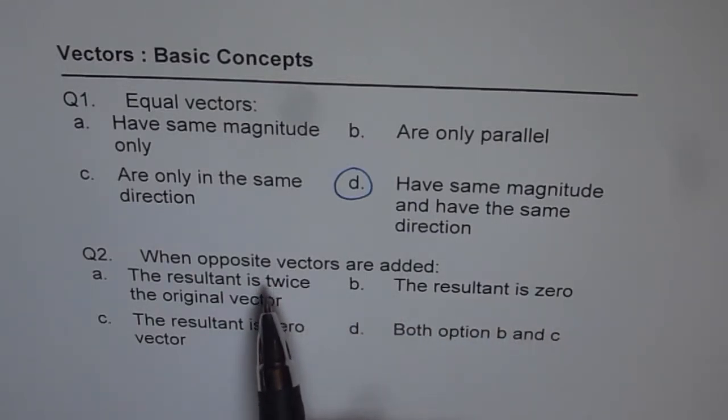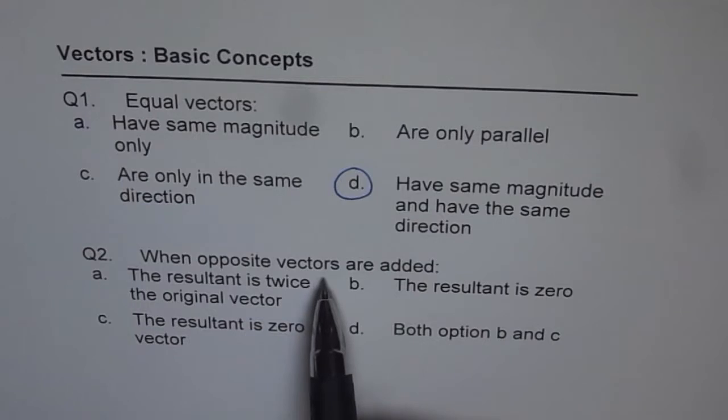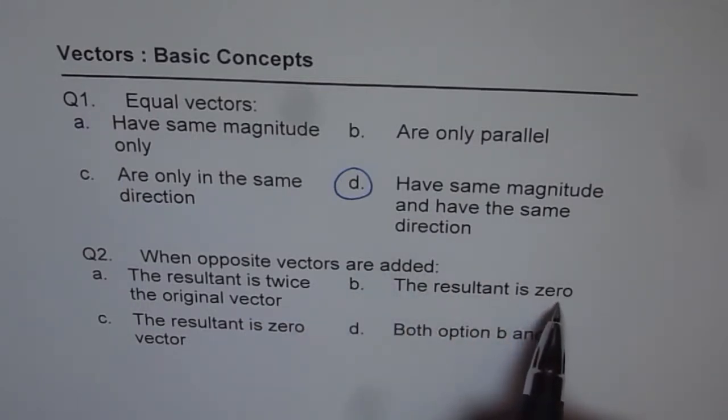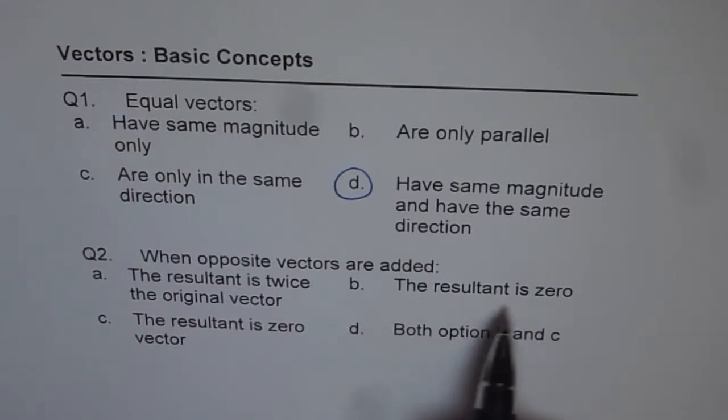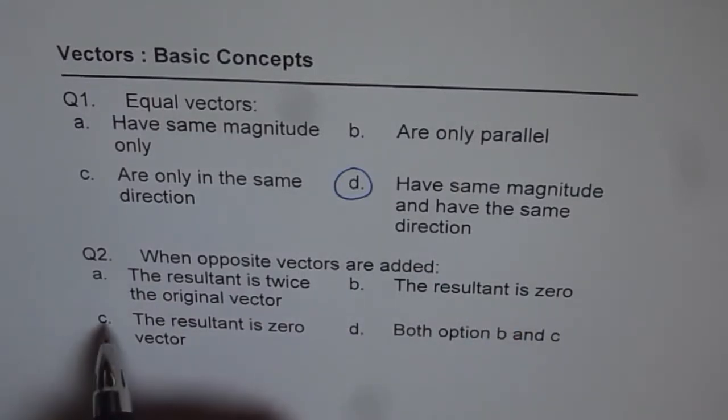Whenever you are adding or subtracting vectors, what you get is a vector, right? The number 0 is not a vector. That's why B is not correct. C is the only correct answer here.